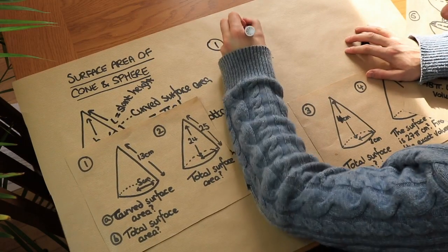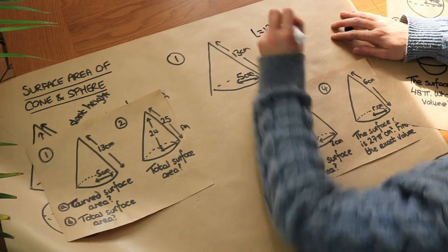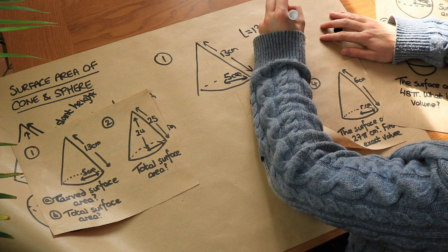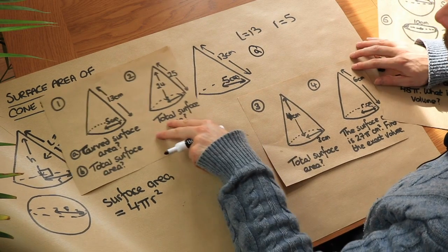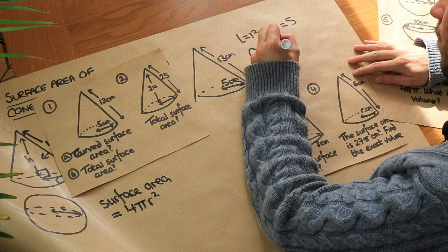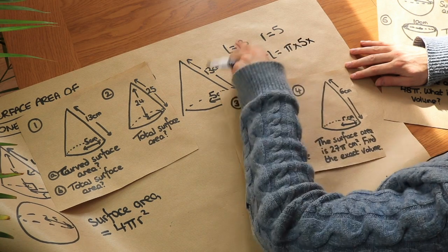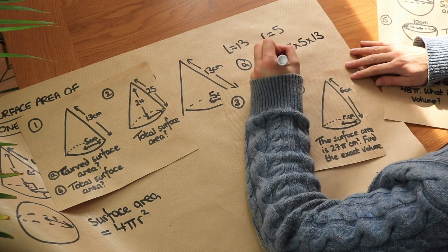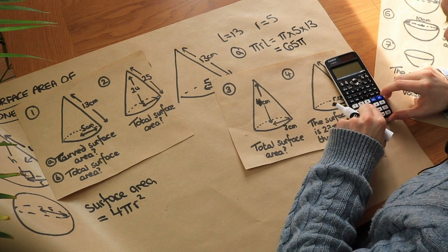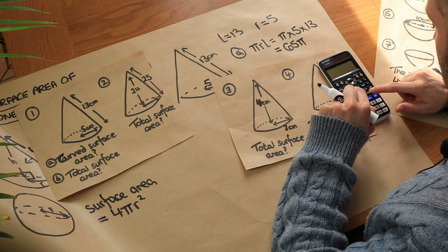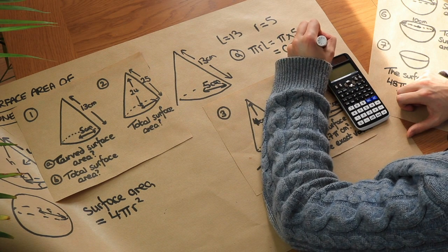We've got this cone with a slant height of 13, so l is 13, and a radius of 5, so r equals 5. First we want to find the curved surface area — part a. The curved surface area is pi r l, which is pi times 5 times 13, and that equals 65 pi. Putting that into the calculator and pressing the SD key gives 204.2 centimetres squared.